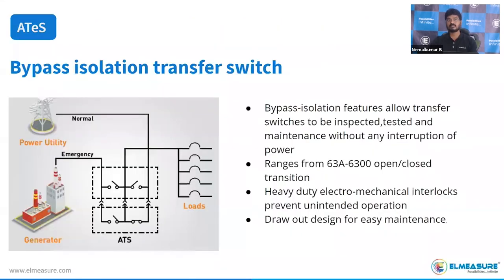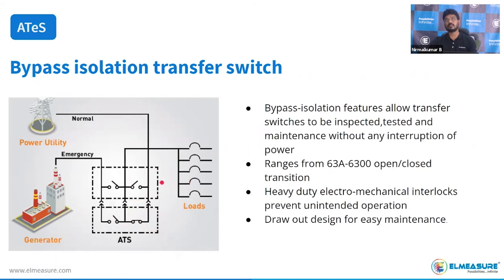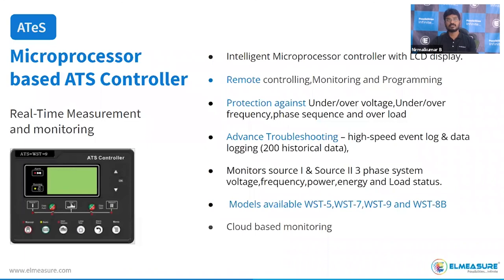For bypass isolation: two ATS units are integrated — a primary ATS and a secondary ATS. The load is normally connected through the primary ATS. If any breakdown occurs on the primary ATS, we can bypass the load to the secondary ATS. For ultra-critical applications like airports and data centers, ATS with bypass isolation is recommended. The bypass ATS features a draw-type ACB design for easy removal, repair, and reinstallation. Minimum range is from 16A to 6300A, available in open and close transition, heavy-duty electromechanical design.